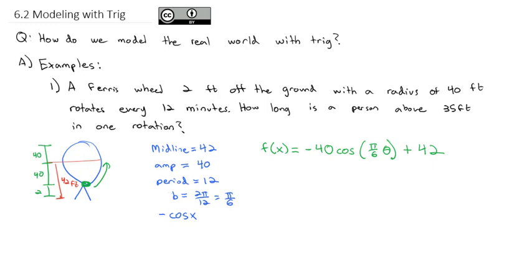Now, this question wants to know how long are we above 35 feet. So what we can do is we can put 35 feet in the answer, because this is building the height that we are. 35 is equal to -40cos(π/6·θ) + 42, and that's going to give us a function that we can solve to answer the question, how long are we in the air?